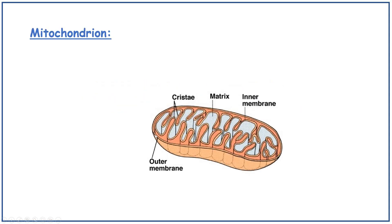Here is a mitochondrion. It has a double membrane. The inner mitochondrial membrane is highly folded, and these folds are called cristae. There is also an outer membrane on the outside. The fluid part of the mitochondrion is called the matrix.